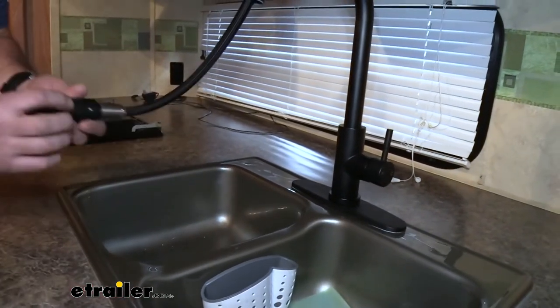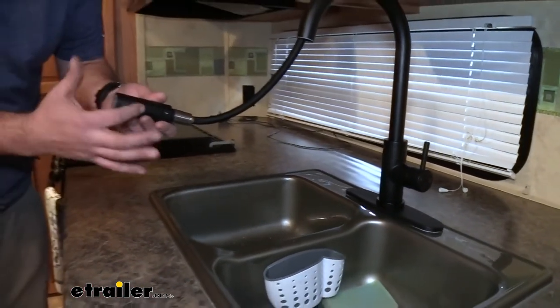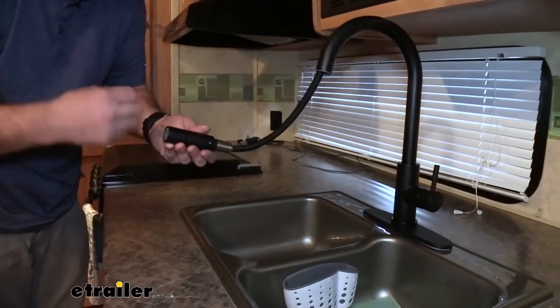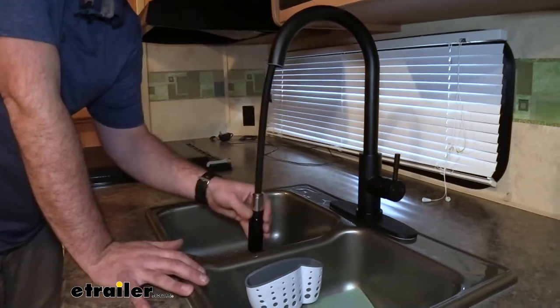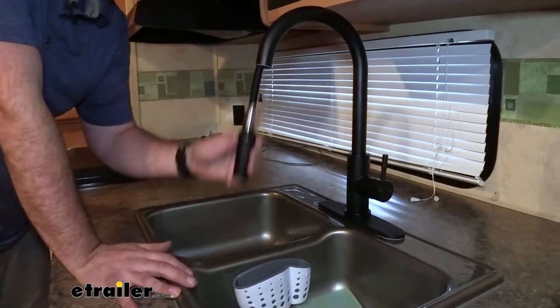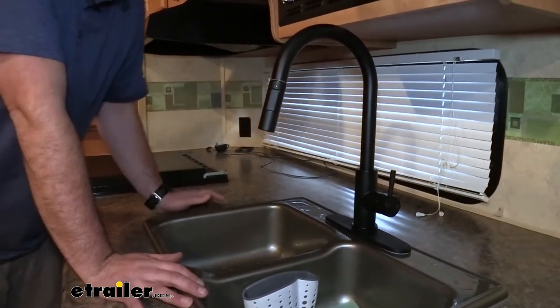You have an option for a stream or a spray pattern, so having that spray pattern is really going to knock down food in the dish, helping clean it up. When you're done you can simply retract this back and it goes back to being a normal faucet.